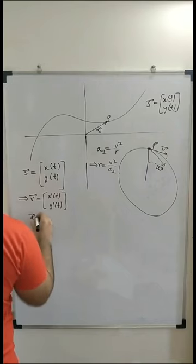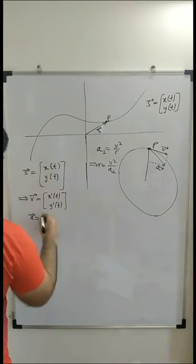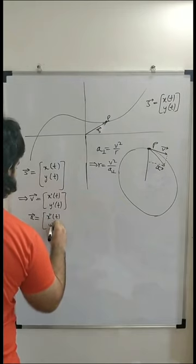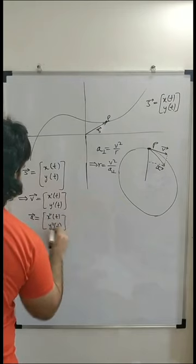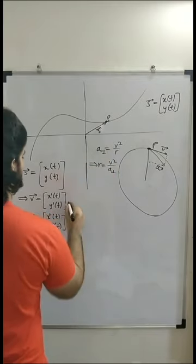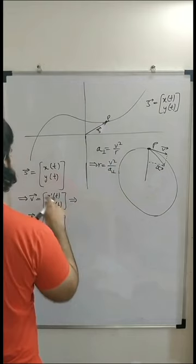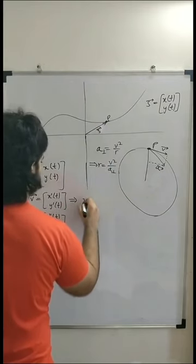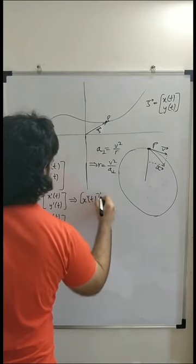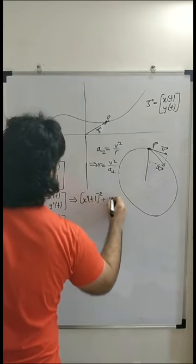And a vector is the derivative of v vector with respect to time, so it's x double prime of t, y double prime of t. So now we know that we can easily find v squared—that's just the mod of v squared, so that's x prime of t squared plus y prime of t squared.